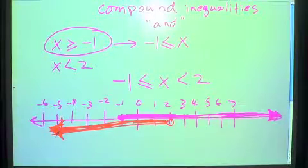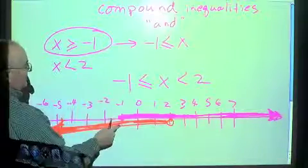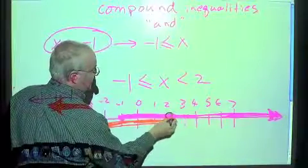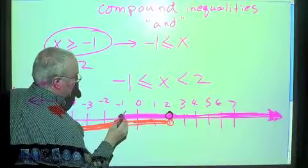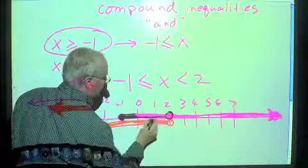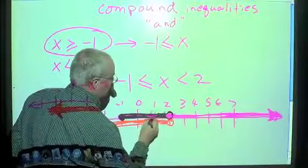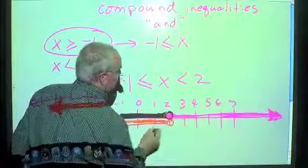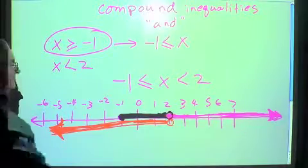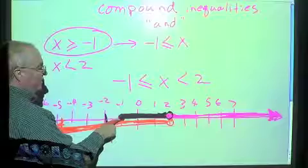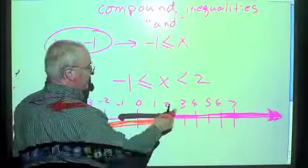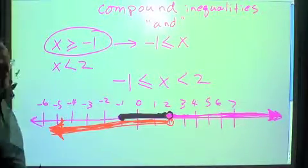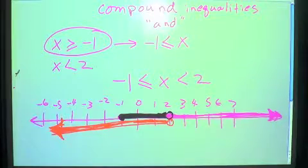How do we find the solution to the whole thing? We combine the two together and stop where they stop. This would be open at 2 and solid at negative 1, and we shade everything in between. The black represents the combination — the intersection of those two. x can be equal to negative 1 or greater than that, up until it approaches 2, but cannot equal 2 because of the open circle. That's how it's represented.